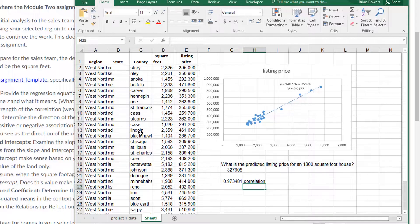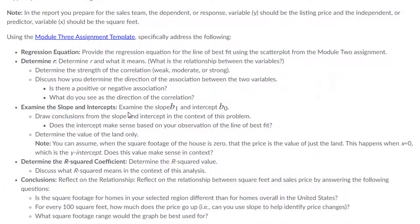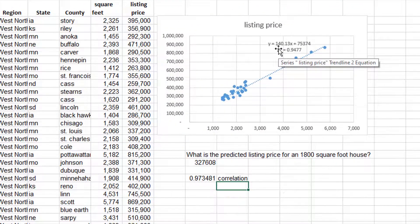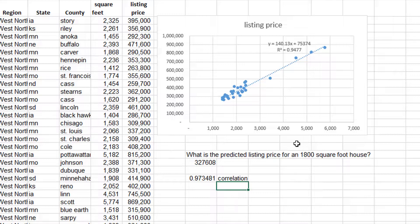Now, one of the things we're asked here, examine the slope and the intercepts. The slope from my equation is 140.13 and the intercept is 75.374. We're asked to interpret the two of them. The slope makes sense. It is saying this is the average or expected change to listing price when you increase the square footage by one square foot. That's the expected change in listing price.